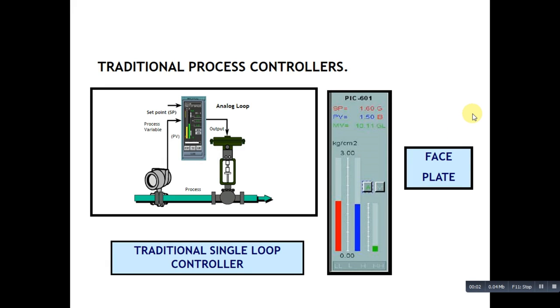Hello guys, today we will discuss the distributed control system. In a traditional process controller, we have a sensor, a transmitter which gives the process variable signal to the controller where we have defined our set point, and then accordingly the output is generated, the manipulative variable which goes to the final control element.